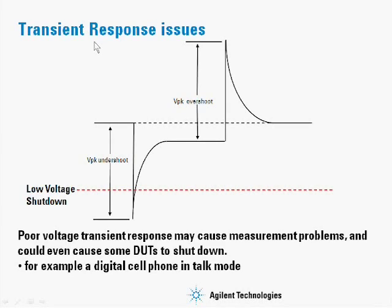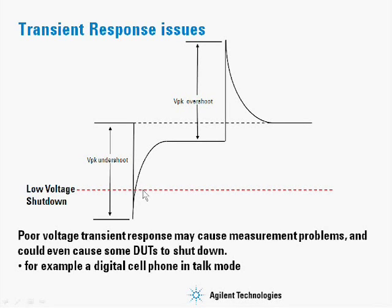Transient response issues that can come up with a poorly regulated power supply include an undershoot that goes below the low-voltage shutdown of the circuit. A good example is a digital cell phone: when it goes into talk mode, it draws a large amount of current, and a battery detect circuit will shut off the phone if the voltage drops below a threshold. So a power supply with bad transient performance would be unacceptable for cell phone testing.